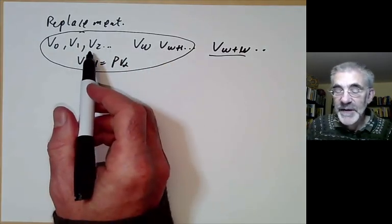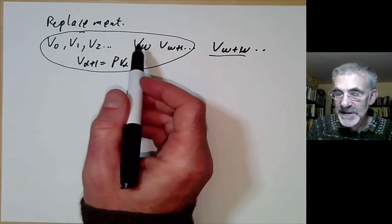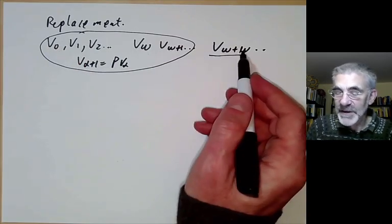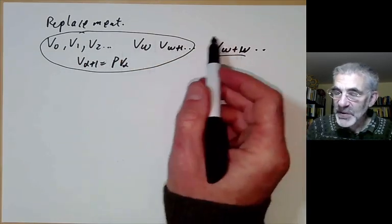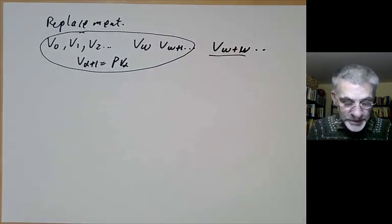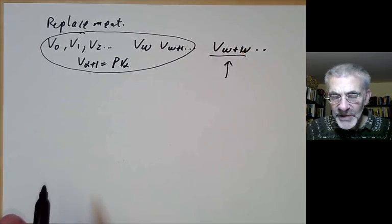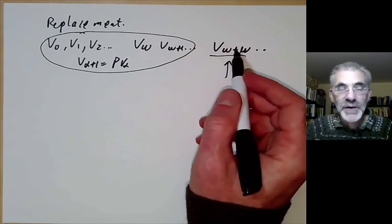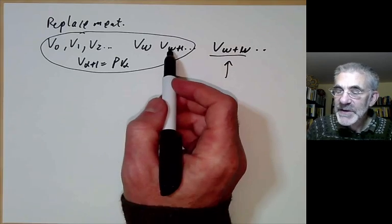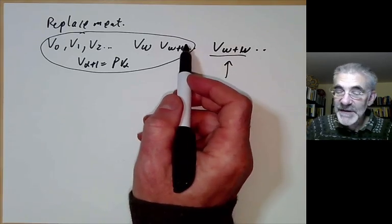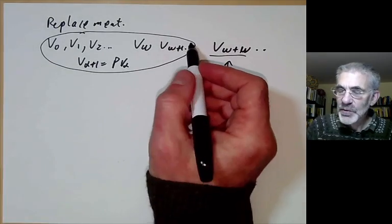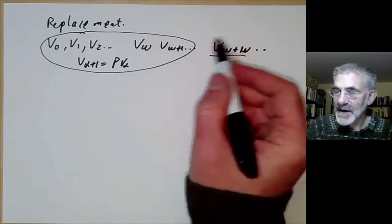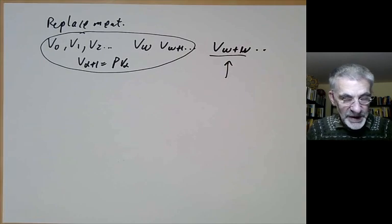Every time you get to a limit ordinal you have to use the axiom of union and replacement to form the corresponding term of the von Neumann hierarchy. You never really need replacement in ordinary mathematics because V_{ω+ω} is big enough to do almost all ordinary mathematics. The real numbers live in V_{ω+1}, subsets of the real numbers live in V_{ω+2}, and you probably never use sets bigger than the collection of subsets of the real numbers. So ordinary mathematics lives down in this region and never goes beyond it. Anybody making serious use of replacement is probably a set theorist, not an ordinary mathematician.